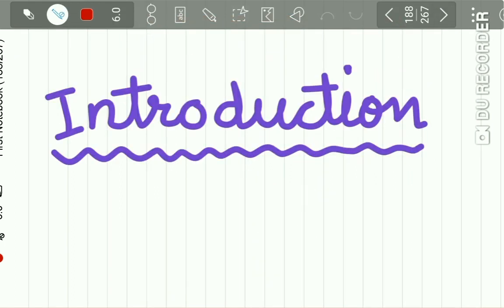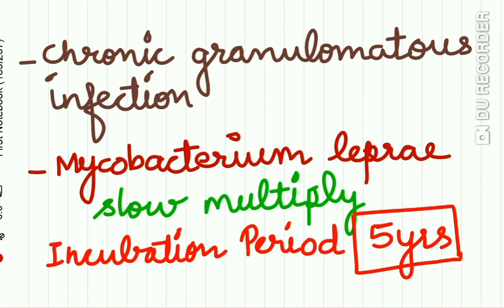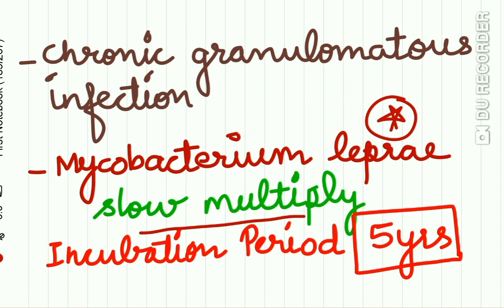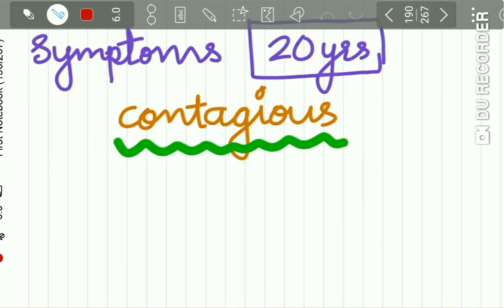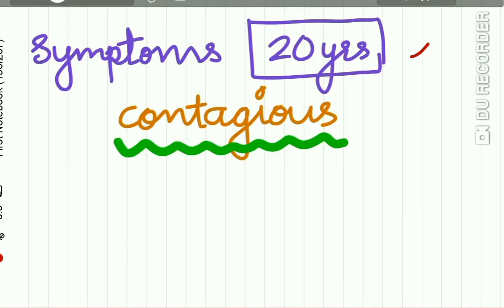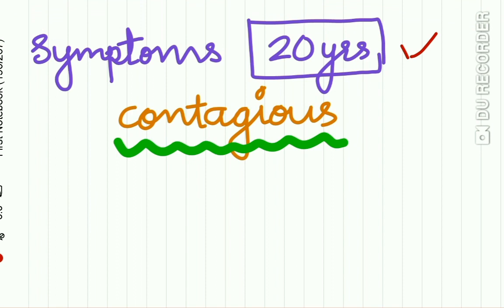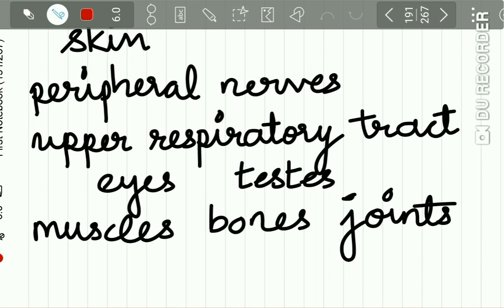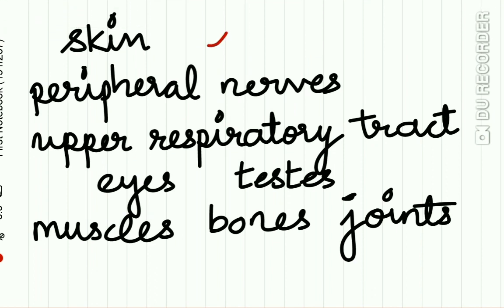Starting with leprosy — the introduction: leprosy is a chronic granulomatous infection caused by Mycobacterium leprae. The causative organism is Mycobacterium leprae and it multiplies very slowly. The incubation period is five years. Symptoms may occur even after 20 years of infection. The disease is contagious and it affects the skin, peripheral nerves, upper respiratory tract, eyes, testicles, muscles, bones, and joints.